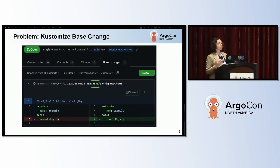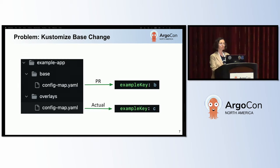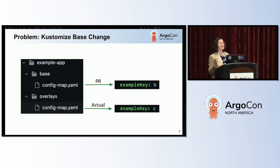Let's take a look at the problem of previewing diffs. Here you can see a very simple change in base, but what if this change should affect all environments — what if one of these environments does not use this base, or what if one of the environments is using an overlay that is overriding this value? The change to value B happens in the pull request at the base in the config map, but value C has overridden this in the overlay, so the actual value will be C. The impact of this simple change is not obvious when we are only comparing fragments of the configuration.